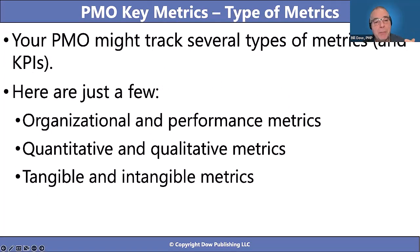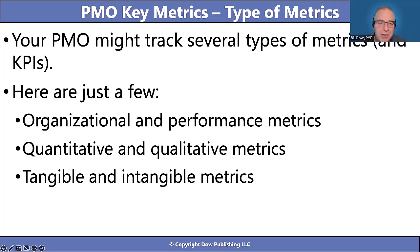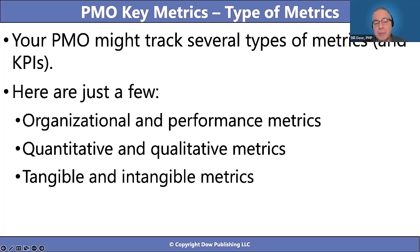Your PMO may track several types of metrics. Organizational and performance metrics are the easy ones we tend to lean to right away — on time, on budget, that type of thing. Then there are quantitative and qualitative metrics: quantitative being that specific number you're trying to hit, qualitative being more of a subjective opinion. And then tangible and intangible metrics. So there are lots of different types of metrics in your PMO.